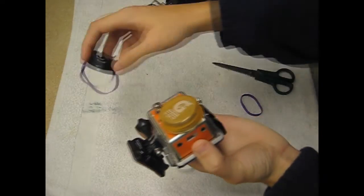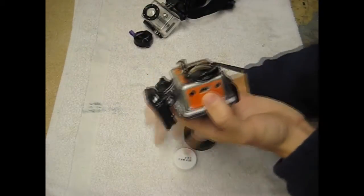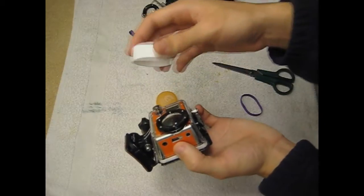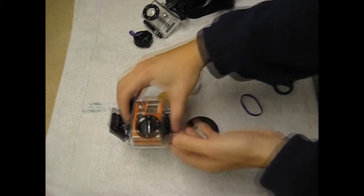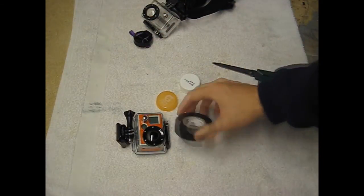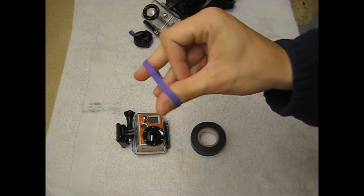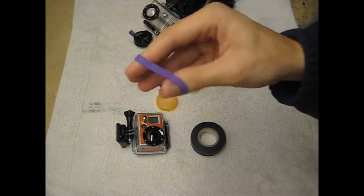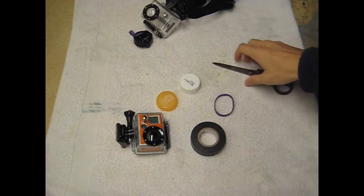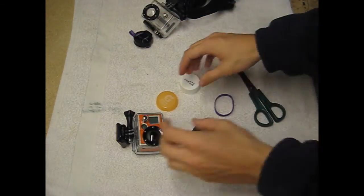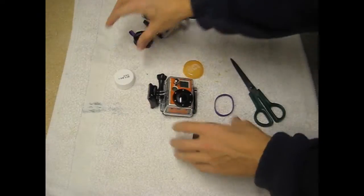So what you need is your cap, some tape—I use electrical tape—a rubber band (these are the thick produce rubber bands that they put on broccoli or something), and some scissors.